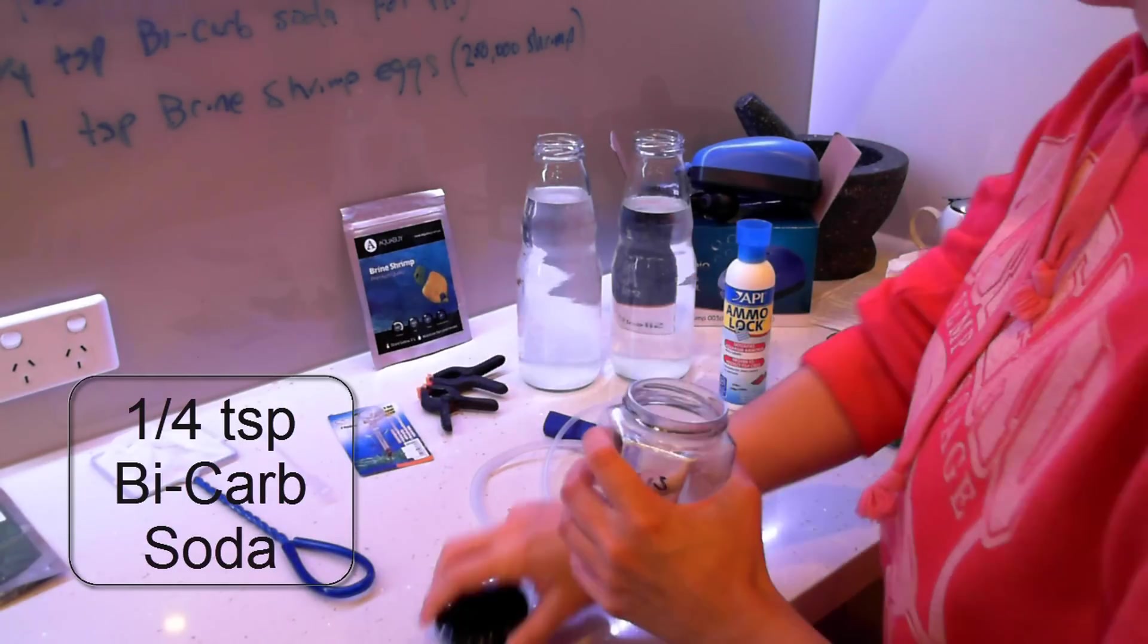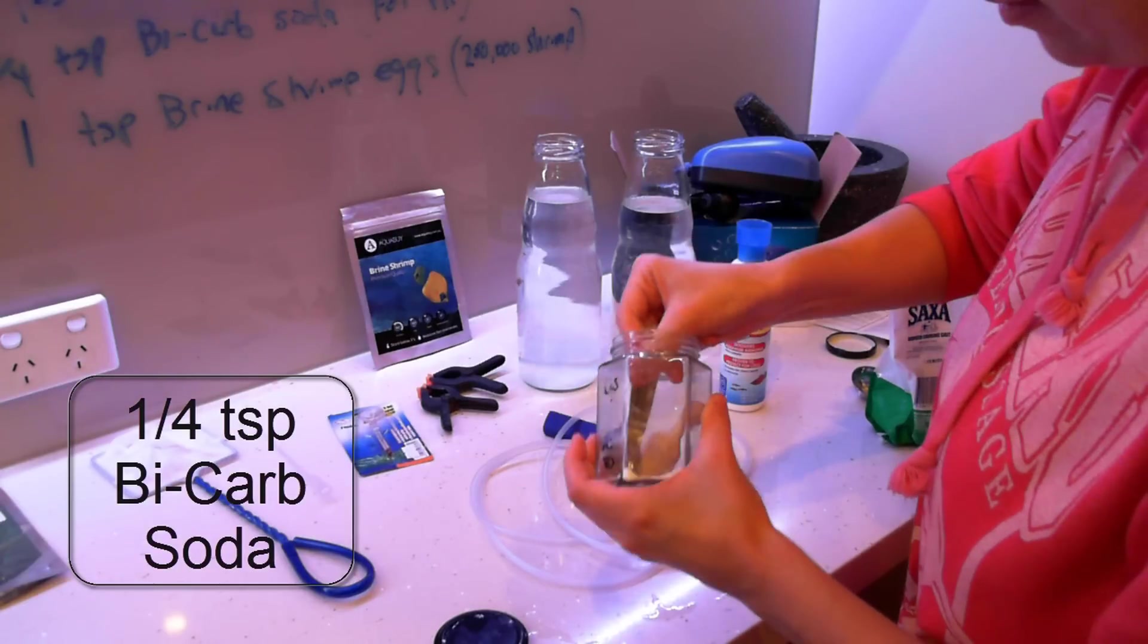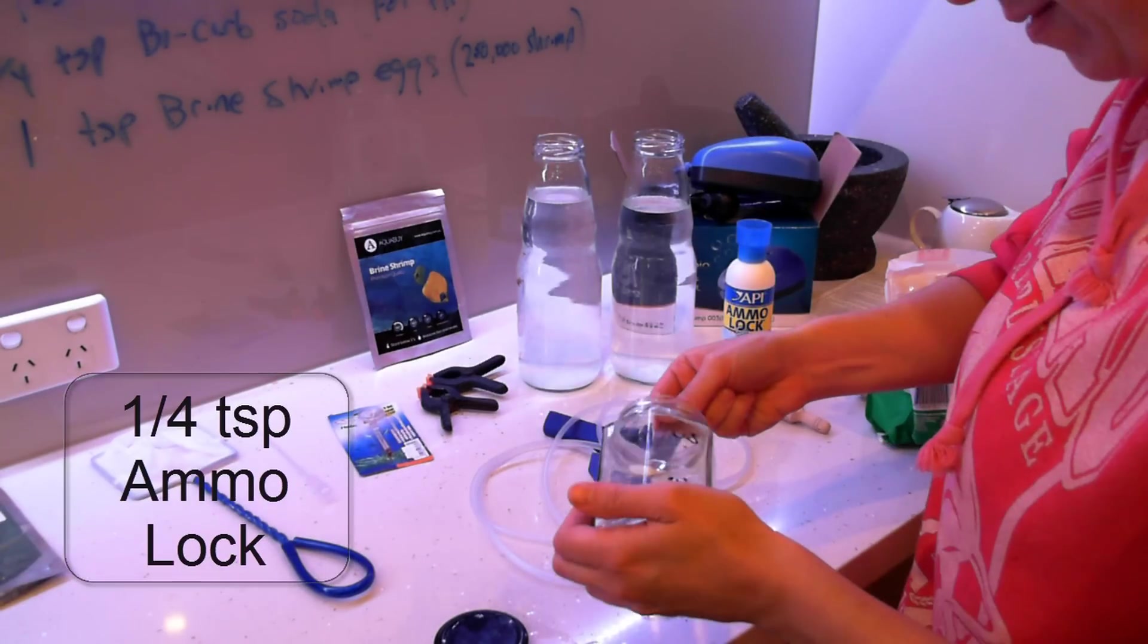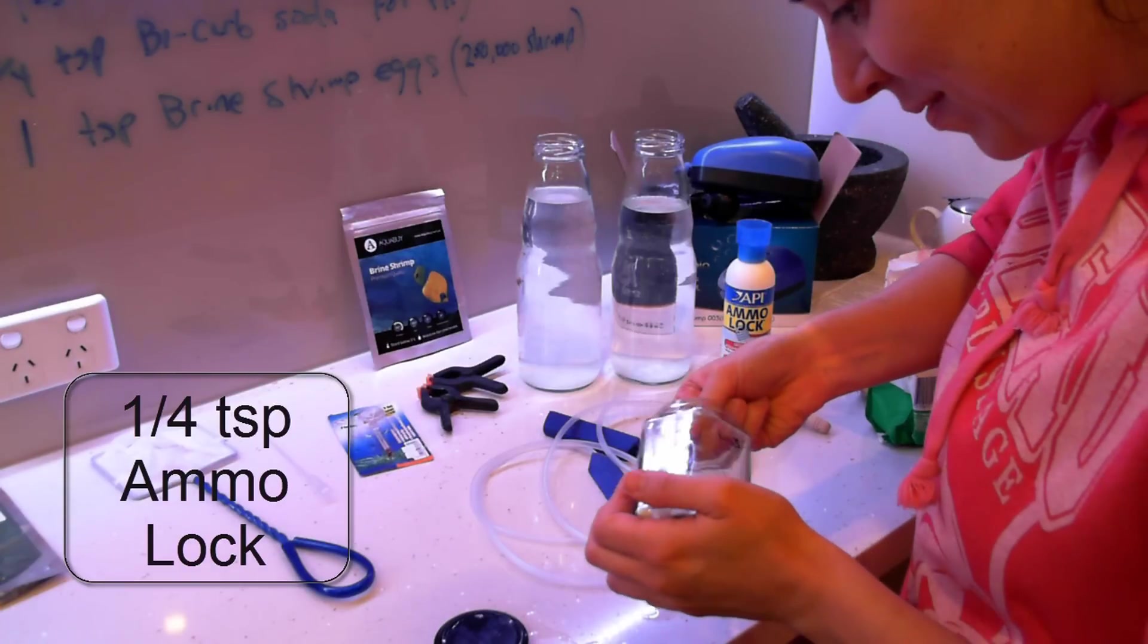Next we have our bicarbonate soda. This is just going to make it slightly more alkaline. That's going to make a nice, friendly, nurturing environment for them to hatch in.